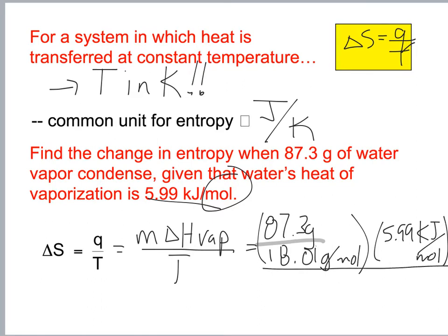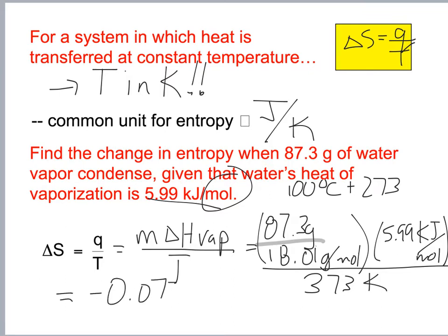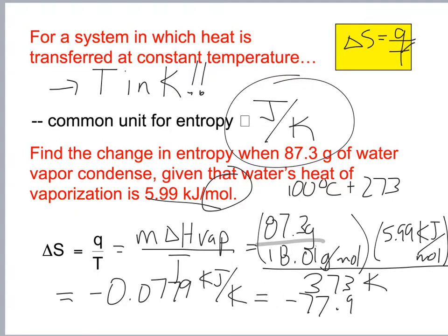Then divide by temperature in Kelvin. Water boils at 100°C, plus 273 gives 373 Kelvin. That gives negative 0.0779 kilojoules per Kelvin, which converts to negative 77.9 joules per Kelvin.